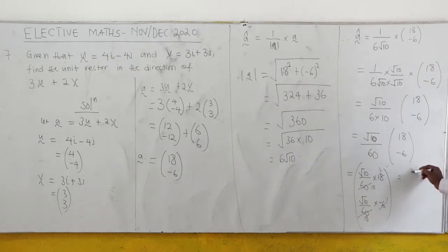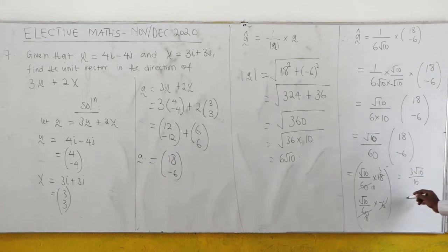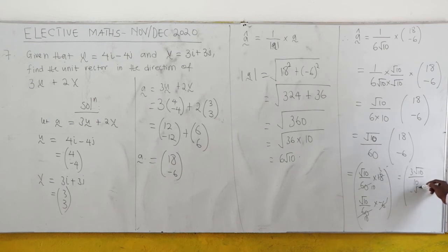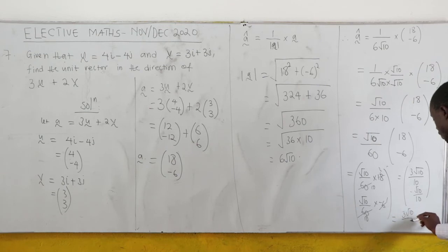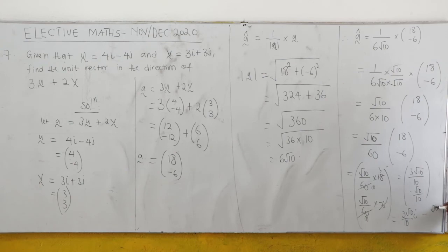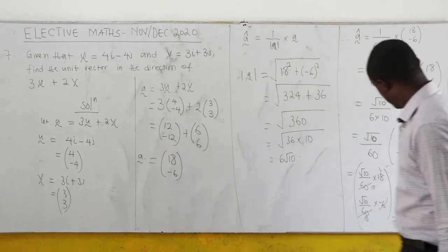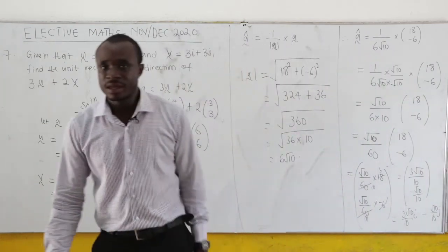Simplifying: 18 over 60 reduces to 3 over 10, and 6 over 60 reduces to 1 over 10. So the final answer is 3 root 10 over 10 i minus root 10 over 10 j. We can leave our answer in this form.